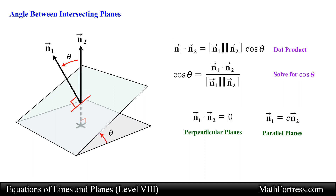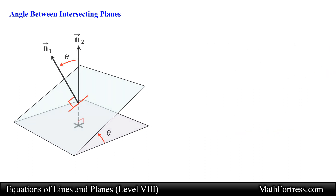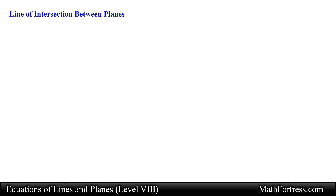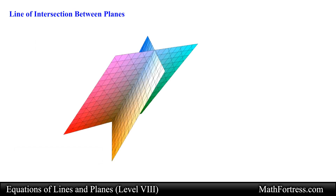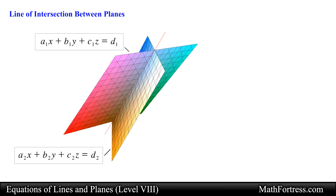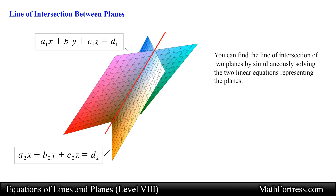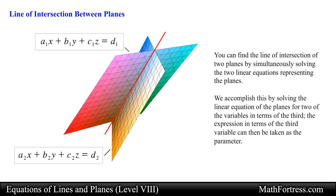Now let's go over how to determine the equation of a line between two intersecting planes. If two planes are not parallel then they intersect in a straight line. You can find the line of intersection of two planes by simultaneously solving the two linear equations representing the planes. We accomplish this by solving the linear equations of the planes for two of the variables in terms of the third. The expression in terms of the third variable can then be taken as the parameter.